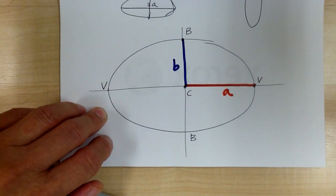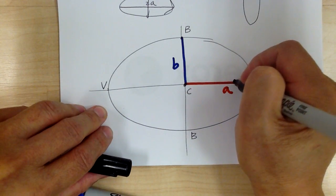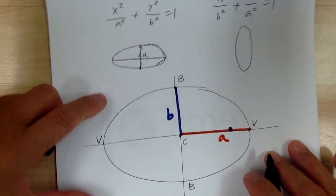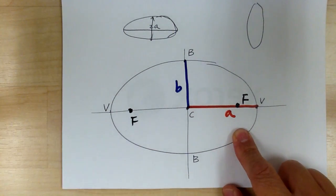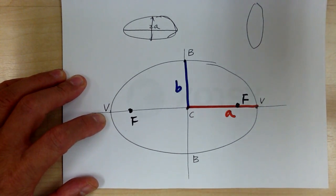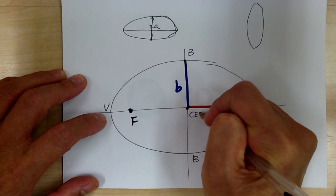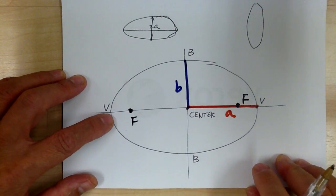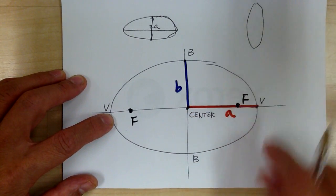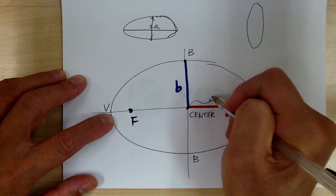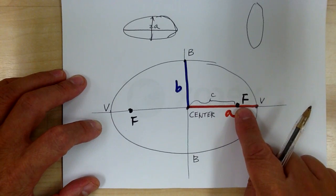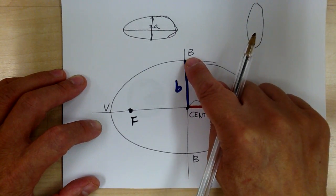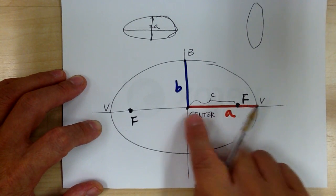Over here you also have the focus. Like before, you can see the focus — this would be your focus. For the ellipse, a is always the biggest number. Now b and c can vary; sometimes b is bigger than c. Don't use c for the center labeling, because this distance is going to be c. So c is the distance from the center to the focus. b is from the center to the end of the minor axis. a is from the center to the vertex.